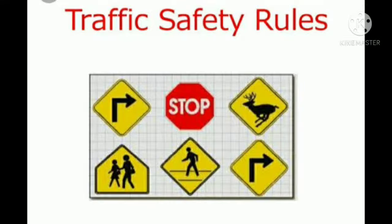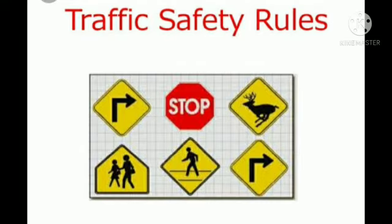The rules which we need to follow on the roads are called traffic rules. We need rules on the road so that we can travel easily and safely. You must have seen some sign boards on the road. You may have also seen some lines and markings on the road. These signs help us to use the road safely.